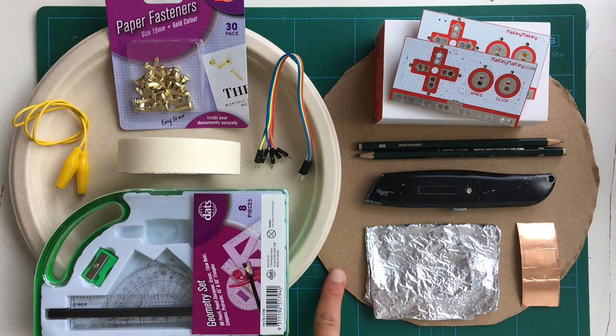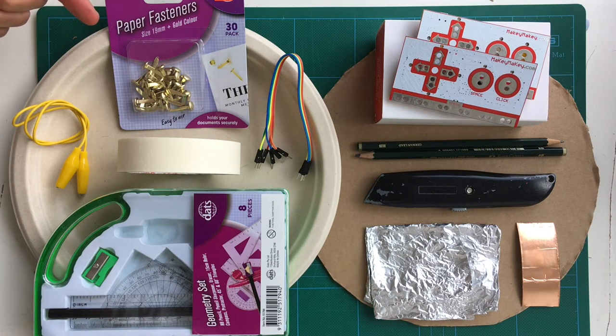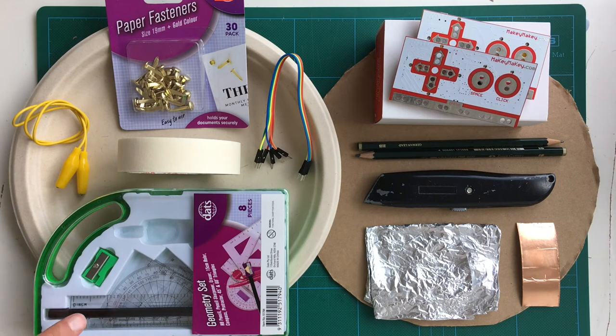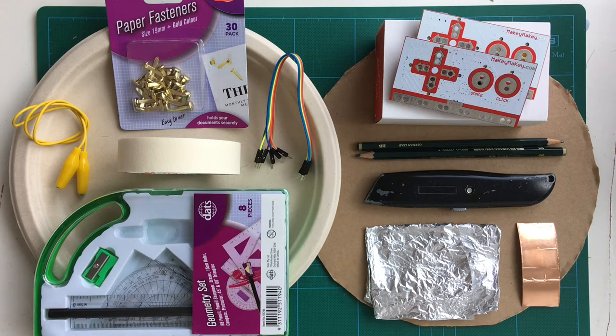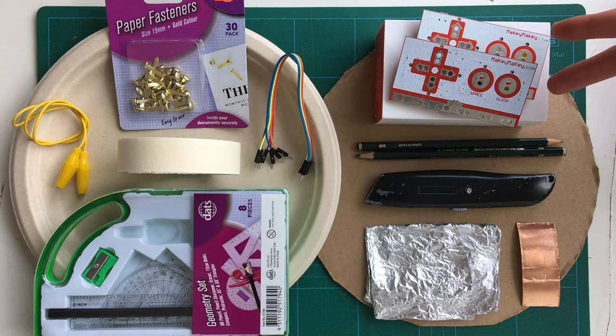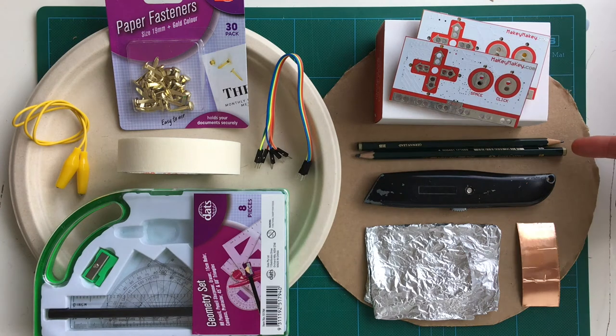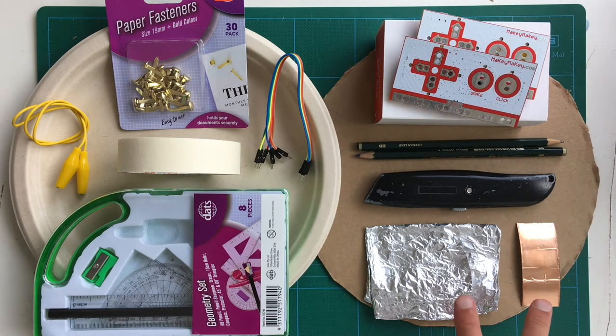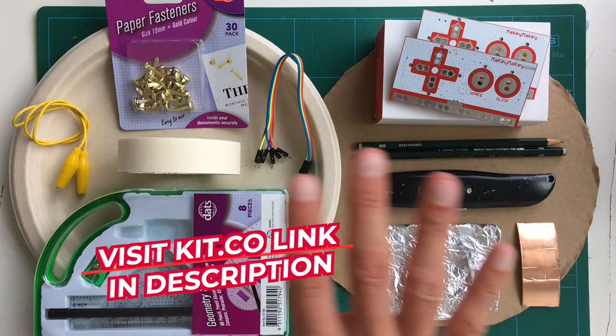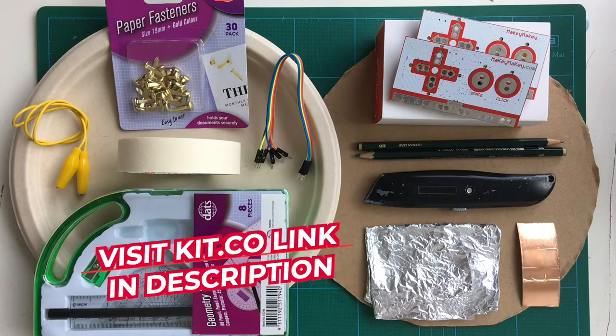You'll need a paper plate, some extra cardboard, some paper fasteners or slip pins, some masking tape. It's pretty handy to have a geometry kit, specifically a protractor and a 60 degree triangle. Some extra alligator cables, some jumper cables. You'll need two Makey Makeys for this project. Graphite pencil, box cutter and some conductive materials like aluminium foil or copper tape. I've organized all these materials on a kit on kit.co. You can find a link in the description. But let's get stuck into it.